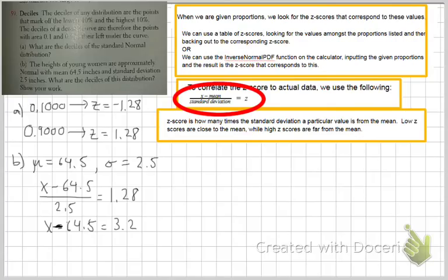So when we solve this out, we get 67.7 is the top decile for height. If we do the same thing with the negative 1.28 z-score,